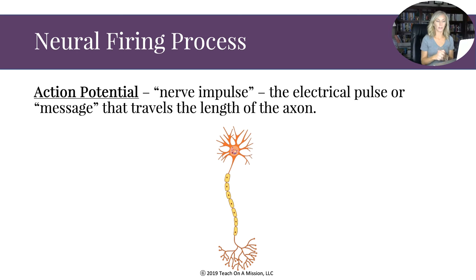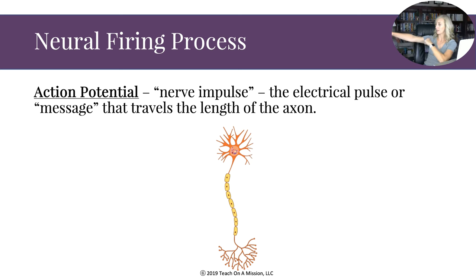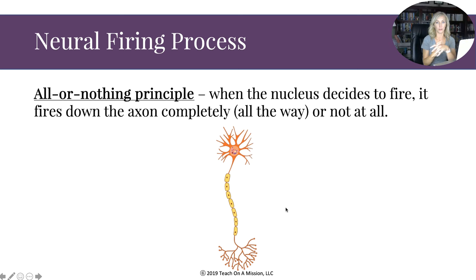Action potential is the nerve impulse — the electrical pulse or message that travels the length of the axon. Action potential only goes down the axon, not through the dendrites or nucleus. Remember, the nucleus decides to fire or not, and when it fires, the action potential travels down the axon.